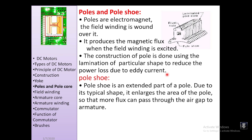The pole shoe is the extended outer part of the pole. Due to its shape, it enlarges the area of the pole so that more flux can pass through the air gap to the armature. The greater the area, the more flux reaches the armature. Poles and pole shoes are made of cast iron or cast steel.